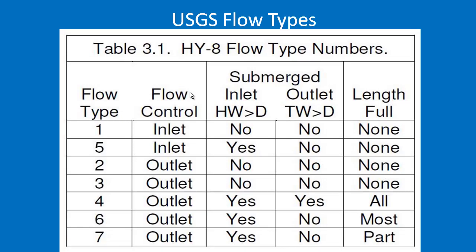There are two types of flow control for culvert systems: inlet control and outlet control. Inlet control means the inlet edge of the culvert is controlling capacity — just that front edge, nothing to do with tailwater. There are two types of inlet control: submerged or unsubmerged inlet, referenced as flow type 1 and flow type 5. You don't need to memorize these — HY8 will tell you which flow type you have after analysis, and you can look it up in the chart if needed.